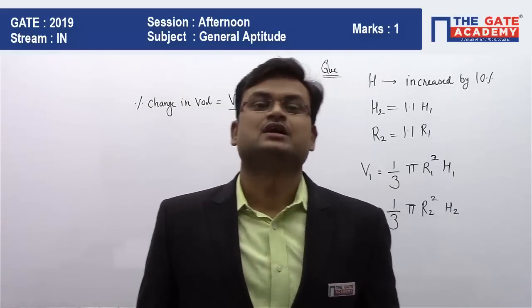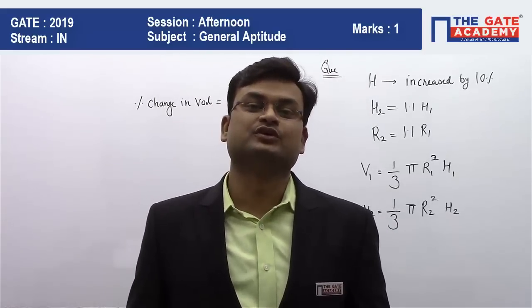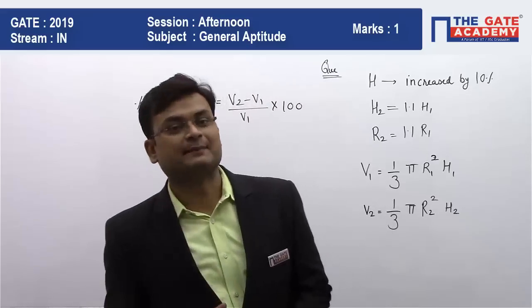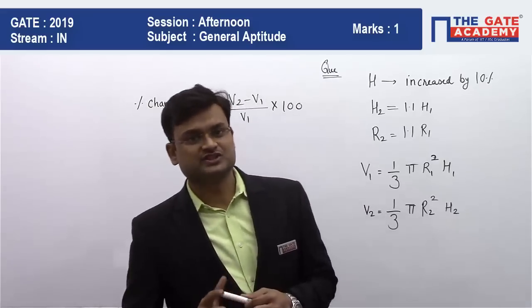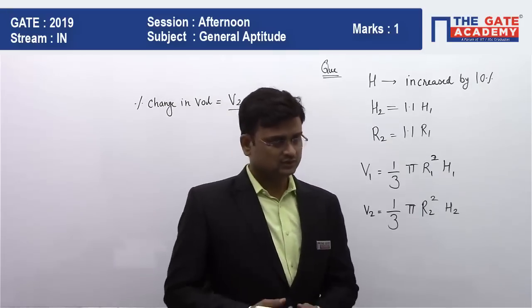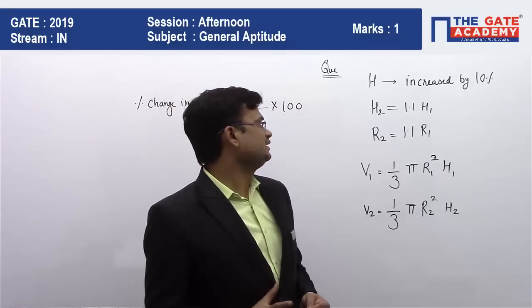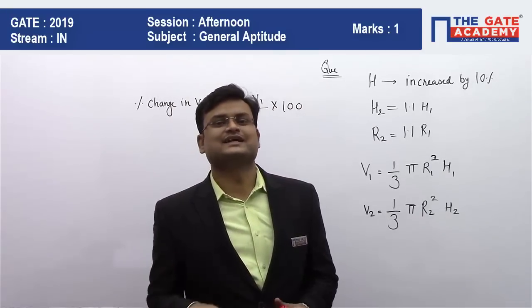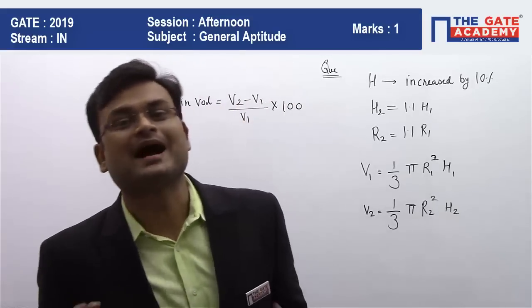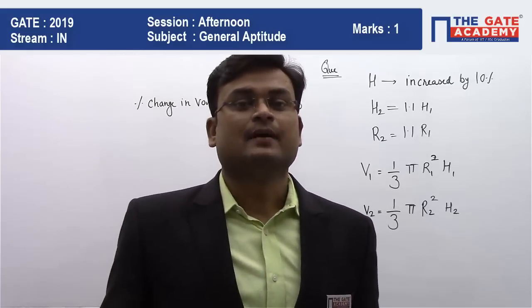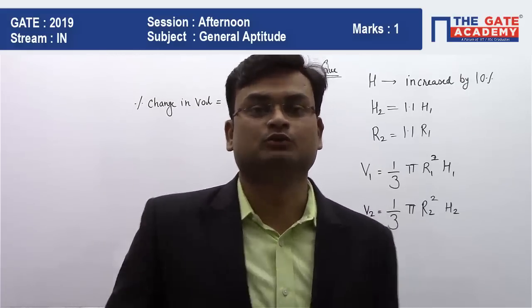In this video we'll be solving a question of general aptitude from the mensuration chapter. The question is very easy if you remember the formula. The question is: there is a cone and the height and radius of the cone is getting increased by 10% each. So what is the impact, or you can say what is the percentage change in volume of the cone?